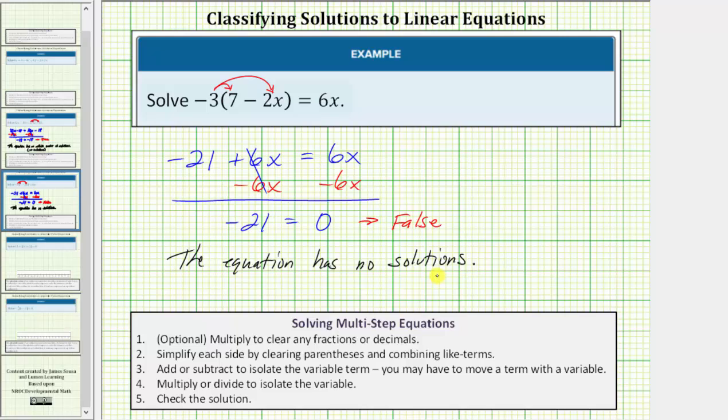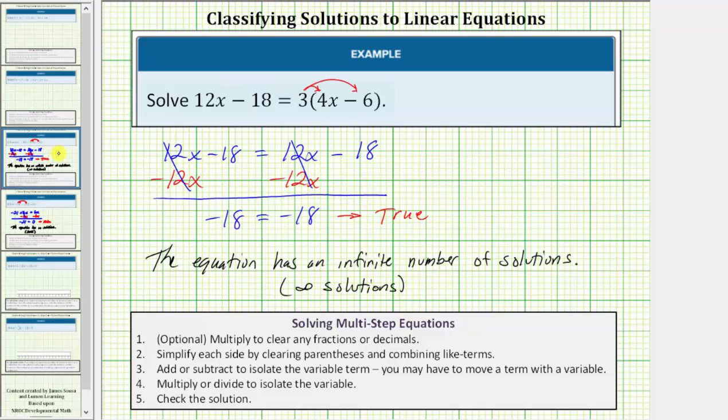Sometimes we also say the solution does not exist, or for short, DNE. DNE stands for does not exist. So we've discovered that when solving a linear equation in one variable, while we normally expect to have one solution, it is possible to have no solutions as well as an infinite number of solutions. I hope you found this helpful.